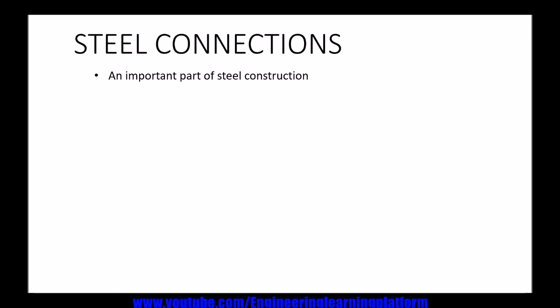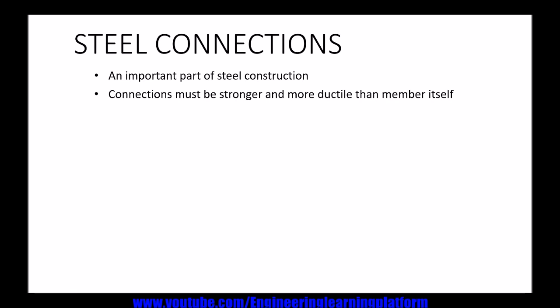Starting with steel connections: a steel connection is the most important part of steel construction — that is, steel structures. We usually do steel structures in industrial buildings and many other structures. The connections must be stronger and more ductile than the member itself. The connection codes are different for different regions; for example, AISC 360 specifications is for the United States, India has its own steel design code, and similarly the European code and others.